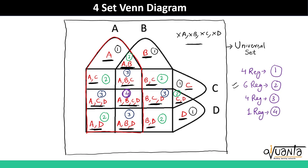I hope you understood the basics of 4-set Venn diagrams. Whenever you get a question based upon four attributes, you always have to draw this diagram and put the values in the regions accordingly. If there is any doubt you can comment below. Thank you.